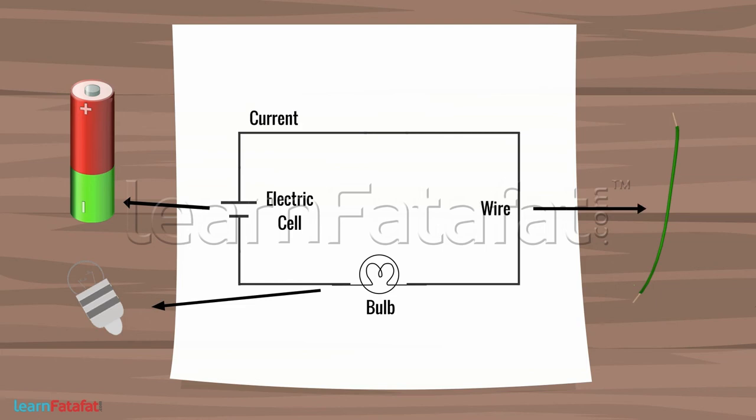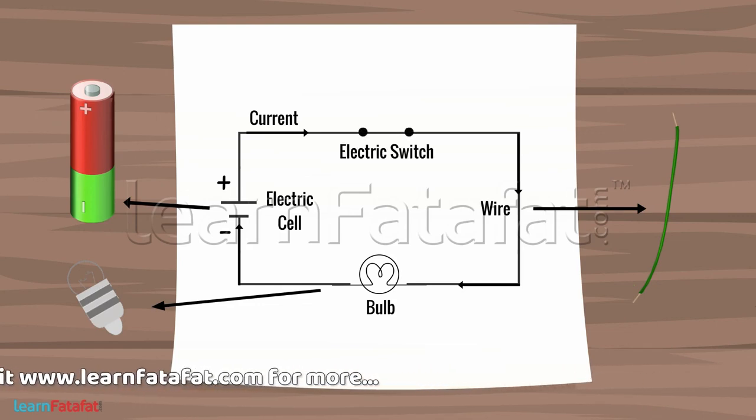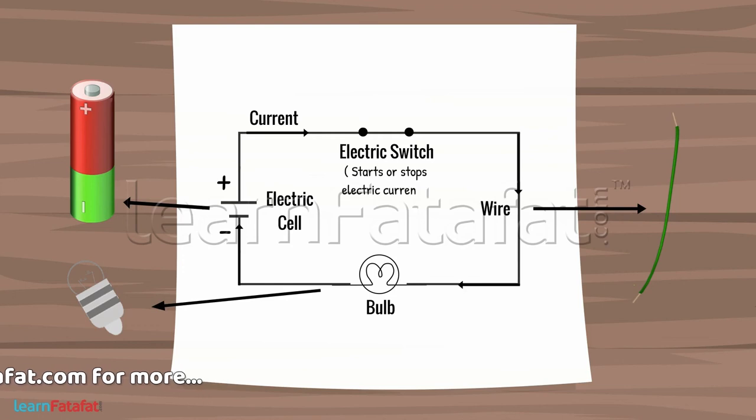Current in this circuit is indicated directing from positive to negative of the cell. Most of the time, a circuit also has an electric switch. It starts or stops electric current through the circuit. So this is about a simple electric circuit using a bulb.